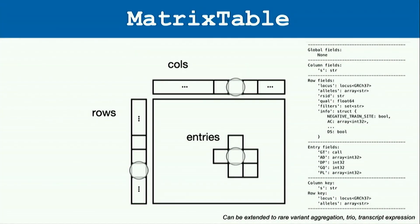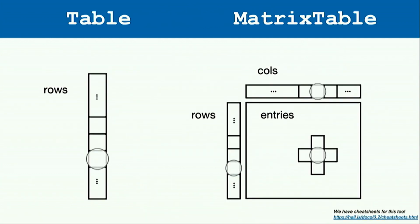This slightly different way of organizing tables — with keys and entries — is designed to enable scalable and parallelized genetics. This format can be exported from transcript files and TRIO files. If you'd like to discuss the file formats you're using, reach out to us at discuss.hail.is or on our real-time Zulip chat rooms.